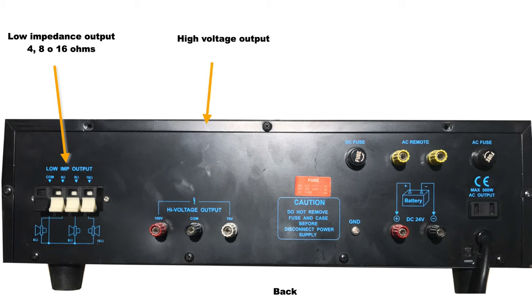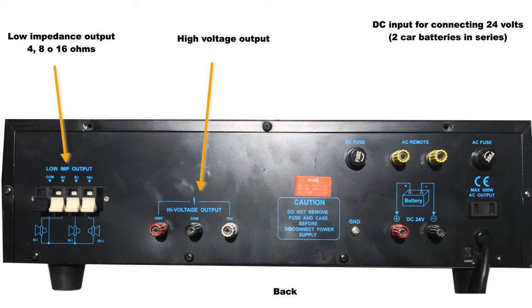The high voltage output is marked as 100 volts and 70 volts — there are also other taps. It also has a DC input in case you want to use it in a car: put two batteries in series and you can power the amplifier with that.